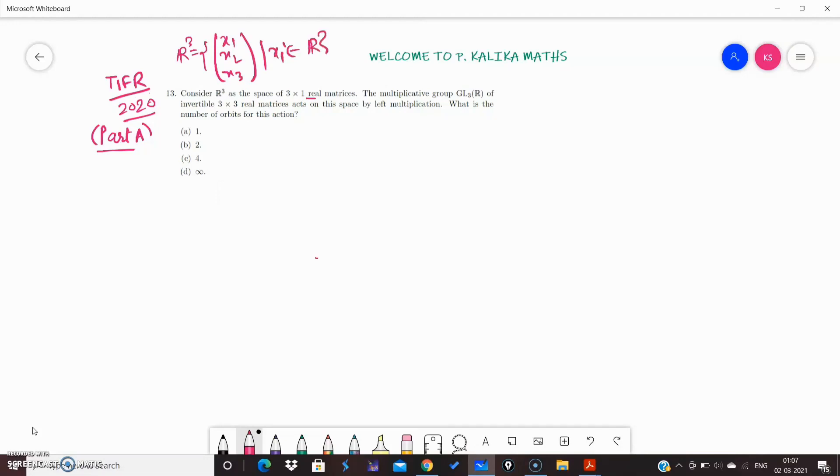The multiplicative group GL₃(R), this is the general linear group, is a collection of all 3×3 matrices over R where determinant of A is non-zero. That means all these matrices are invertible.